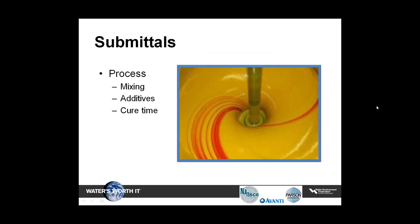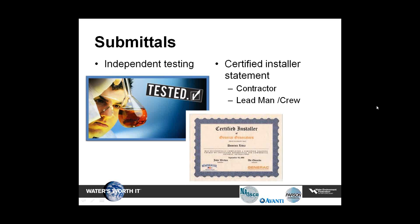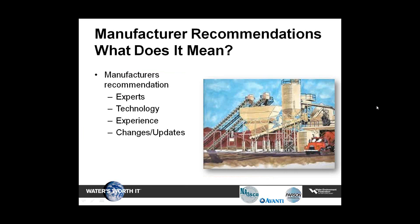The manufacturer's detailed description of the recommended material installation or application process — including mixing, additives, set time, cure time, and return to service — shall all be submitted. Also included: the manufacturer's detailed description of all required field testing processes and procedures, and copies of independent testing performed on the rehabilitation component indicating that the product meets the manufacturer's design requirements. Manufacturers are the experts of their technology — they are the ones keeping up to date with advancements in raw materials, and their recommendations should be strictly adhered to.